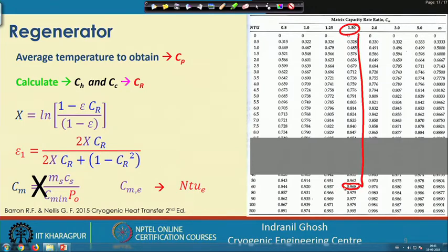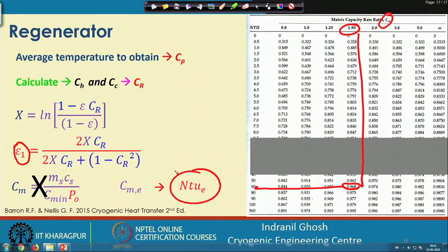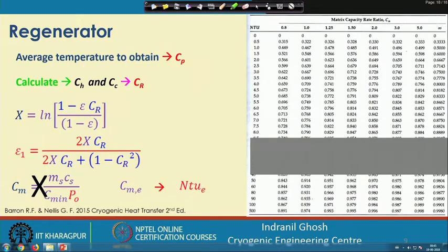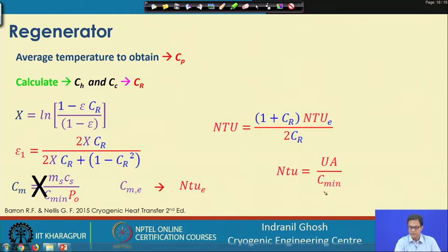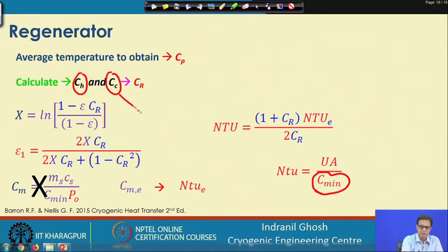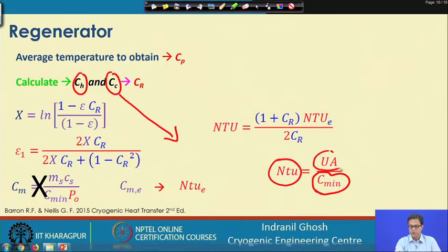For example, if epsilon_1 is 0.968 and C_me is assumed as 1.5, the corresponding NTU is 60. Once the equivalent NTU is known, we calculate the actual NTU from the relation NTU_effective / (2·C_R). With the NTU known and C_min already calculated from C_H and C_C, we can compute U·A from NTU = U·A / C_min.